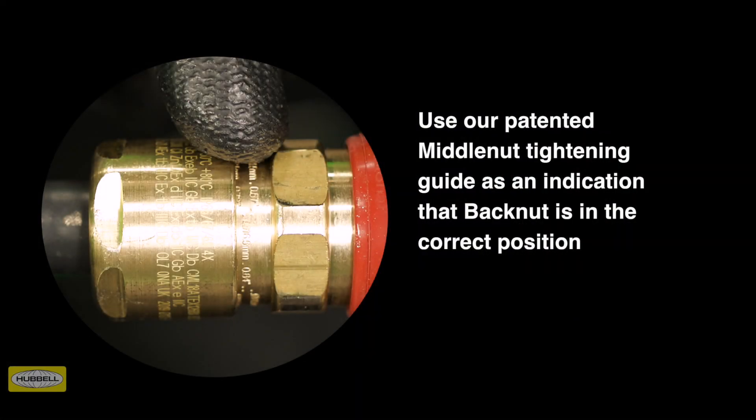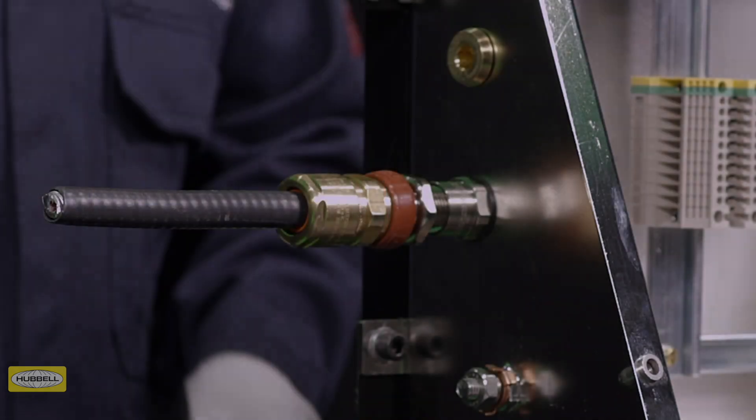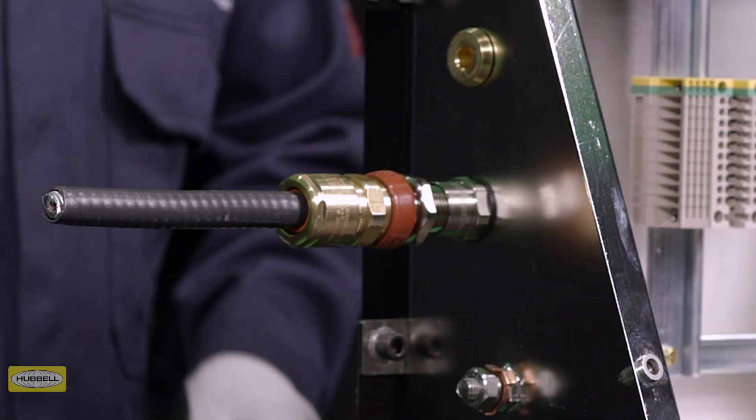Use our patented middle nut tightening guide as an indication the back nut is in the correct position to suit cable diameter. Tip: A diameter scale is provided in our assembly instructions to help with this process. Installation is complete.